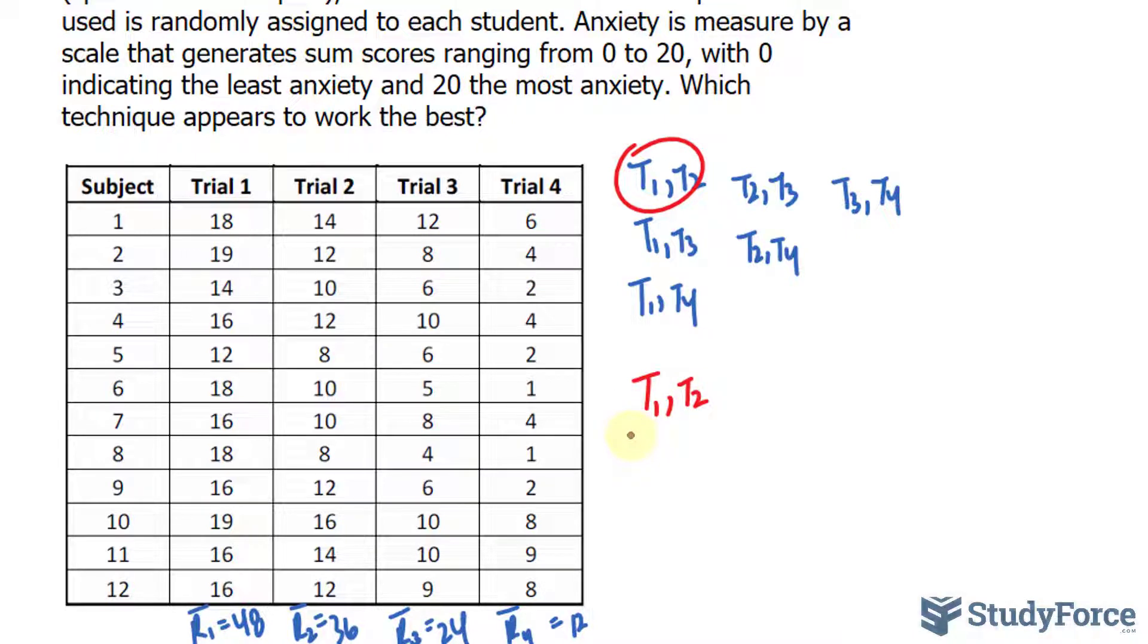Every time you perform this test, you have to write down a null and alternative hypothesis. The null hypothesis is that the medians for each trial are equal, that they're no different, the treatments are no different. Whereas the alternative is that they are different, and I've represented that with a not equals to symbol.